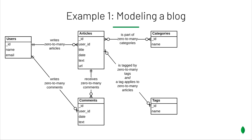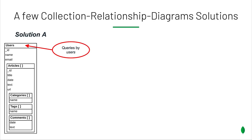Let's look at the first example. We're going to model a blog. We're going to have users write articles. Articles get comments that are also written by users, and articles can be categorized and receive tags. If we're going to model that in the tabular world, there will be only one solution — the one that respects the third normal form. With MongoDB and the document model, there are different solutions for the same problem. Let's say we want a solution oriented toward making queries for users. We would have a main collection of users which would contain the articles and all the information about them.